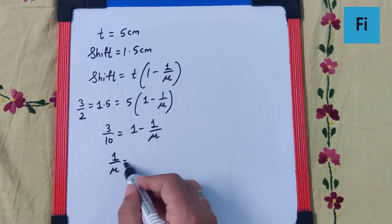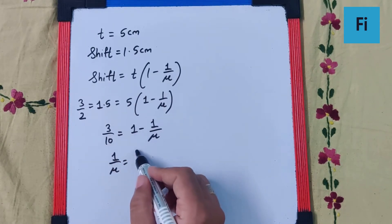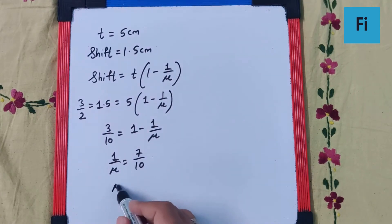So 1 by mu equals 1 minus 3 by 10, which is 7 by 10. Therefore, mu equals 10 by 7.